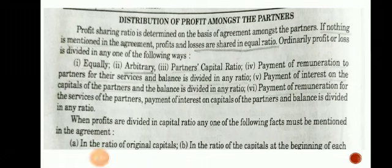For example, there are four partners A, B, C, D. A invests 50,000, B invests 30,000, C invests 60,000, and D invests 10,000. On the basis of the amount of investment, partners are liable to receive interest and profit. Those partners who invest more capital will receive more profit, and the partner who invests less capital will receive less profit.